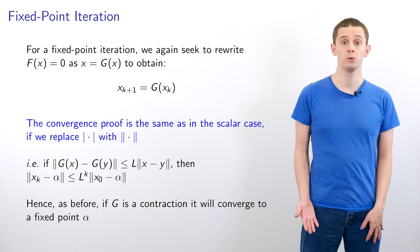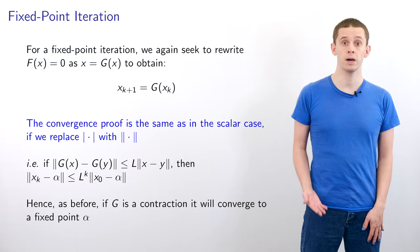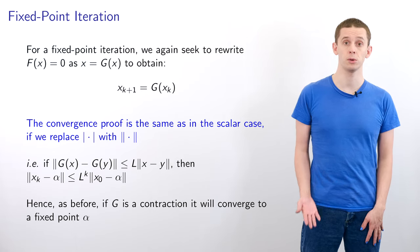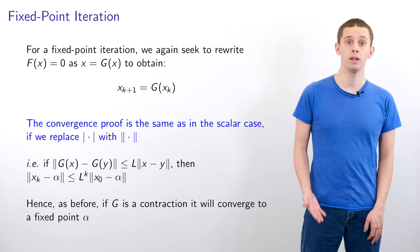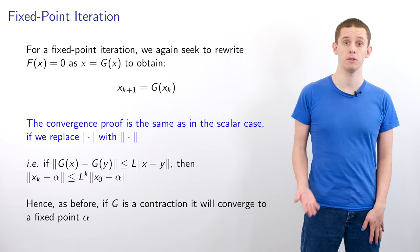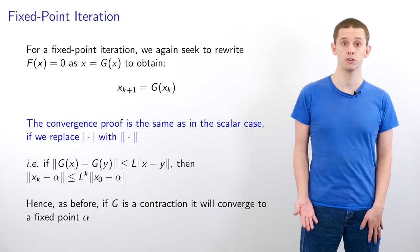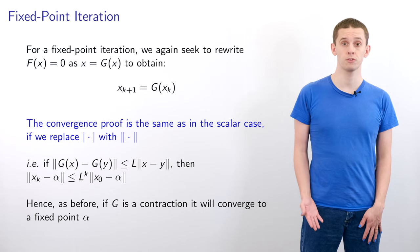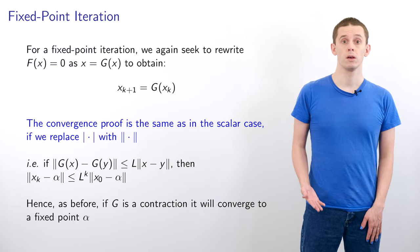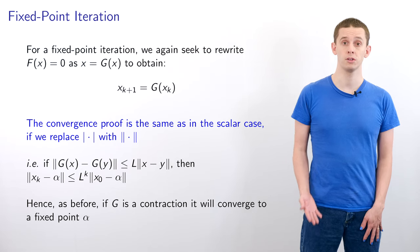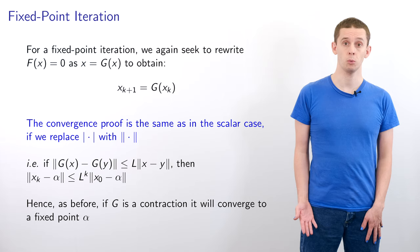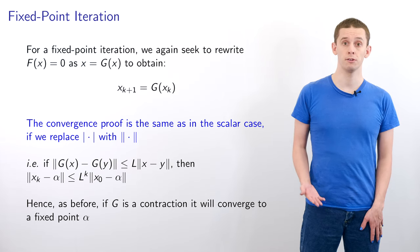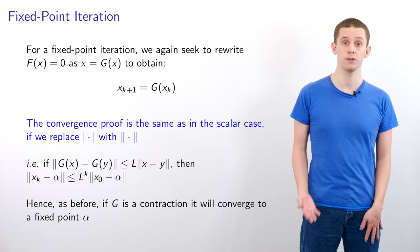For fixed-point iteration, we want to rewrite F of x equals 0 in the form x equals g of x, and that will lead to an iteration x_{k+1} equals g of x_k. We can establish many of the same properties we had for the scalar case by following through the same convergence proofs, but replacing the modulus operator with the norm operator. If g satisfies a Lipschitz condition with Lipschitz constant L strictly less than 1, then g will be a contraction and our fixed-point iteration will converge to some fixed point alpha.